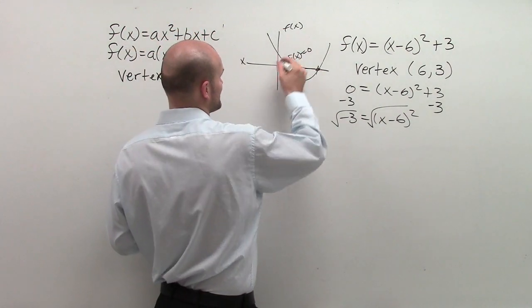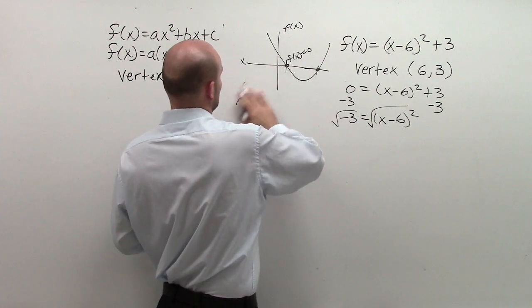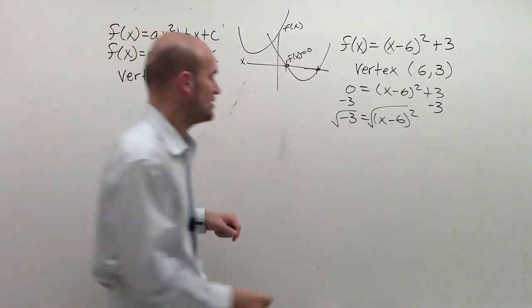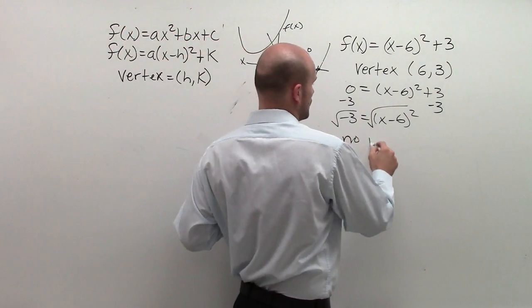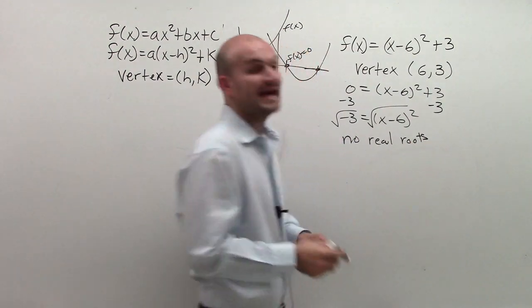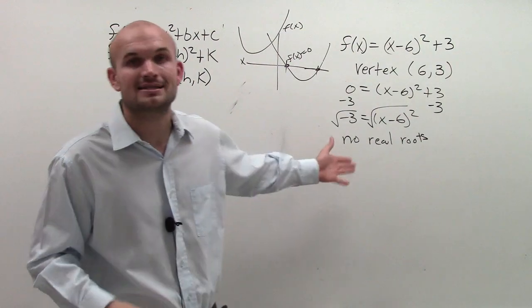So really what my graph looks like is probably something positive, but it's probably going to look something like that where it does not cross. So what I'm just going to write is there are no real roots.